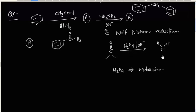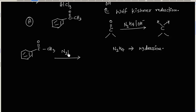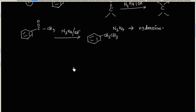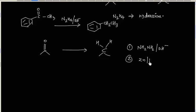When compound A is treated with N2H4/OH-, it will generate benzene with a side chain CH2CH3 (ethylbenzene). So there are two methods by which we can convert a C=O group to a CH2 group: one is N2H4/OH- in basic medium (Wolff-Kishner reduction), and another is Zn(Hg)/HCl in acidic medium (Clemmensen reduction).